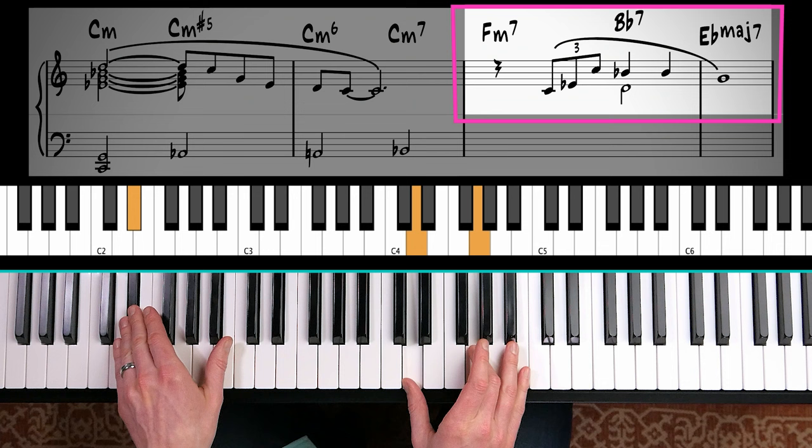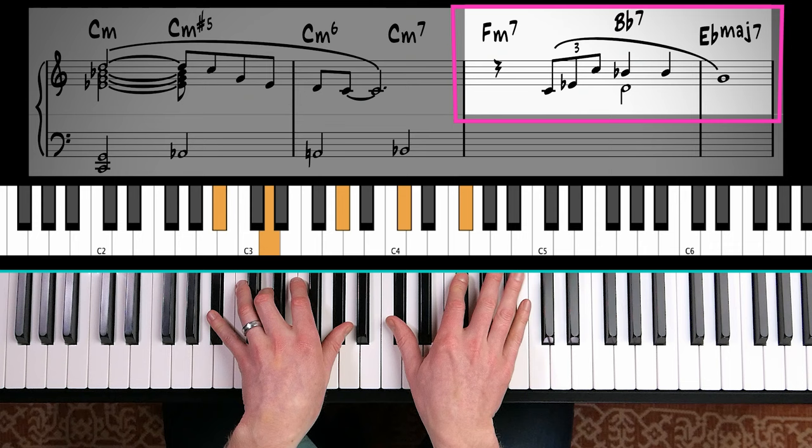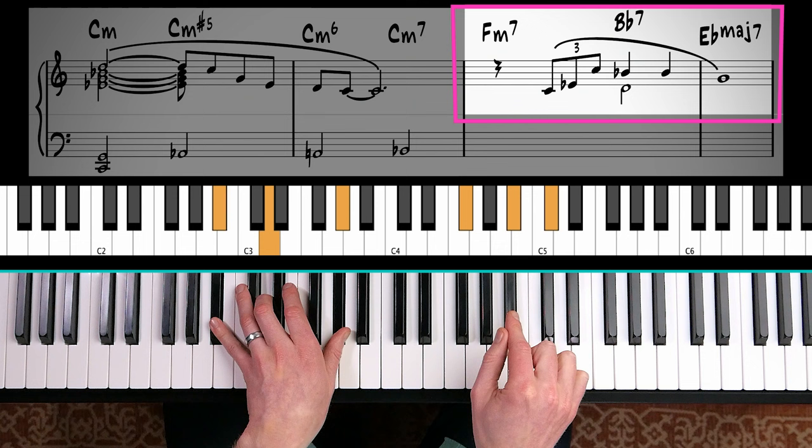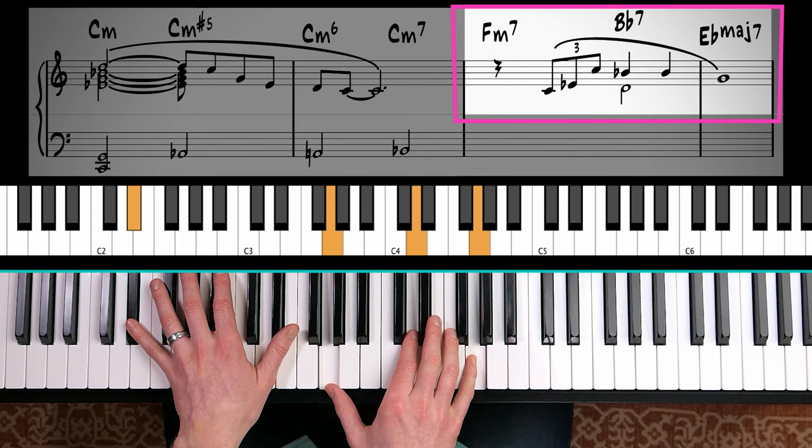Or we could try and play an upper structure on the dominant seven chord. Playing G flat major triad in inversion because the top note is B flat. Take this down an octave. Could play that. Ending on a shell.